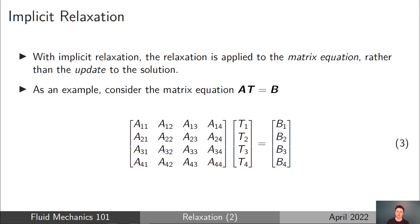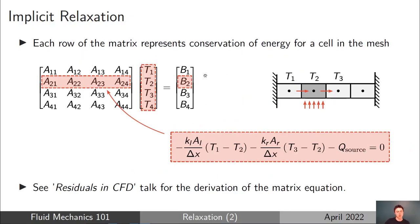The main idea behind implicit relaxation is to apply the relaxation to the matrix equation itself rather than the update to the solution. Rather than solving the matrix equation and then relaxing the update, we apply the relaxation directly to the matrix equation. I'll illustrate this using the same example — the four-by-four matrix equation for the temperature distribution in the bar, A T equals B.